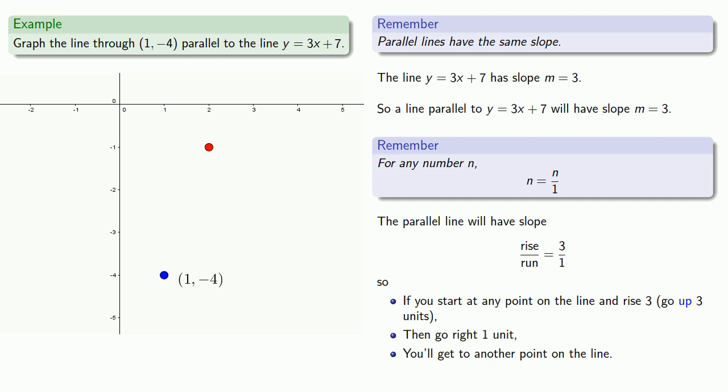And again, it's worth noting that this takes us to the point (2, -1). And since we have two points of the line, we can draw the straight line between the two points.